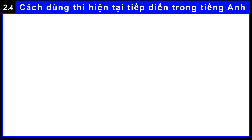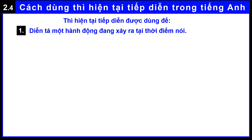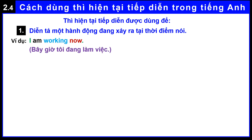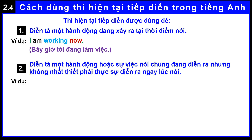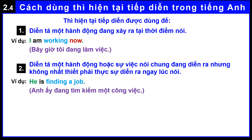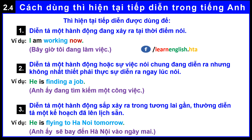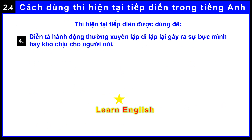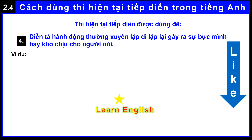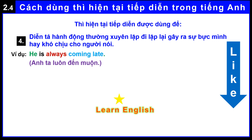How to use the present continuous tense in English. Present continuous tense is used to: one — for example, I am working now. Two — for example, he is finding a job. Three — for example, he is flying to Hanoi tomorrow. Four — for example, he is always coming late.